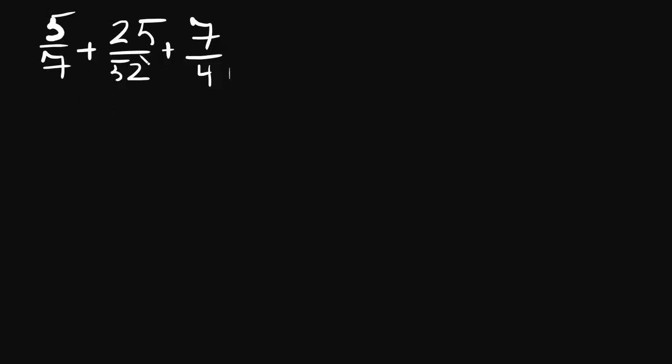We're going to look for the lowest common multiple for the numbers in the denominators. That is to say, the smallest number into which all three of them will evenly divide.